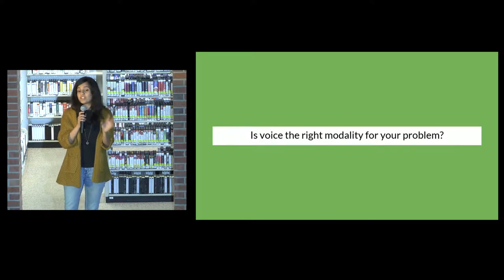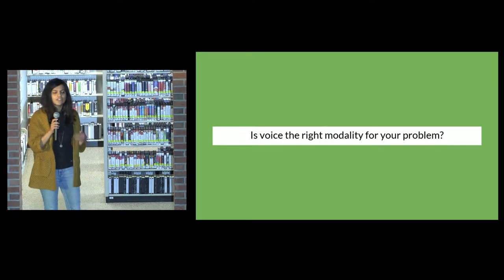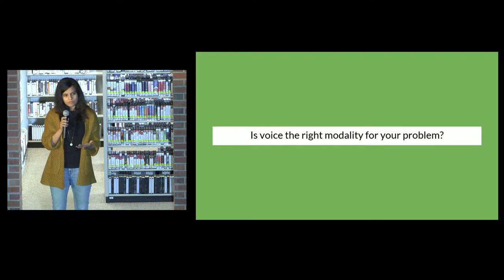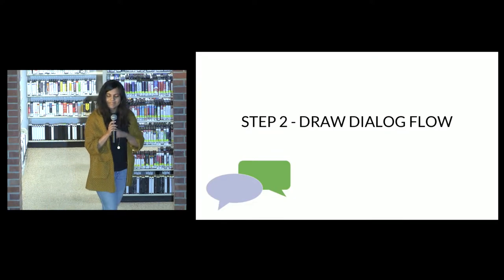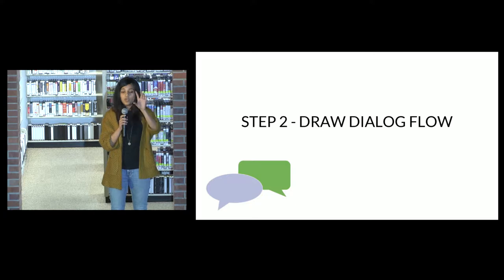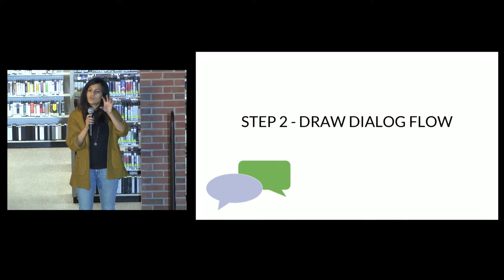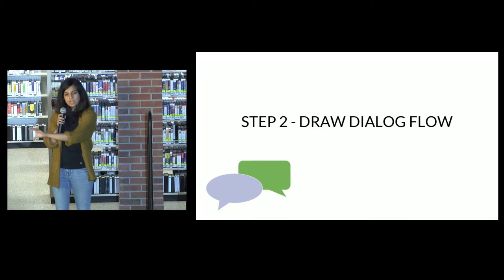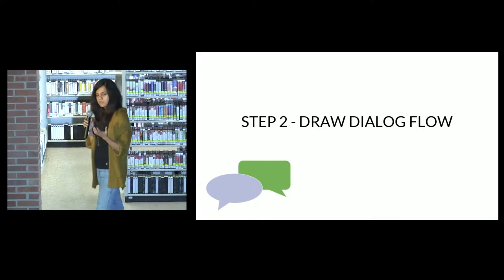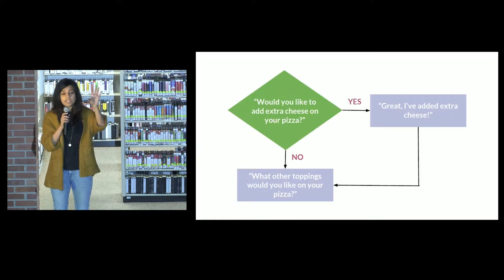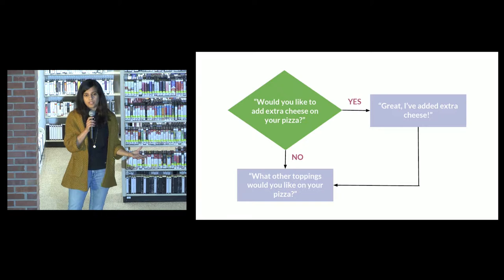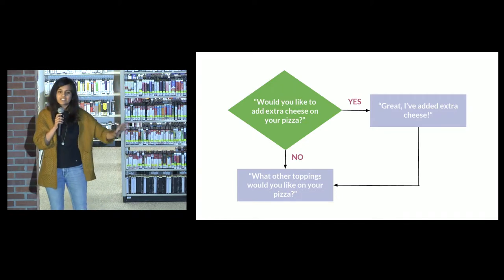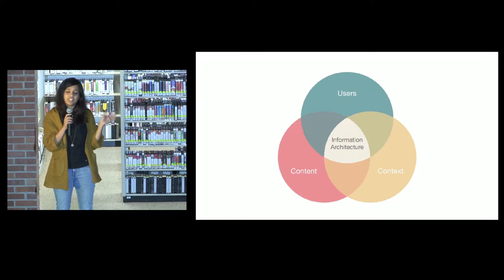Once you've identified your problem and convinced yourself why voice is the solution, move on to the next step: design a dialogue flow. A dialogue flow is essentially a decision tree with nodes and branches. The nodes are your decision points, and based on what your user says, you pick a particular branch. For example, if the Domino's app on Alexa says 'Would you like some extra cheese on your pizza?', and the user says yes, the app says 'Great, extra cheese is always good.' If they say no, it says 'Okay, what other toppings would you like?' You want to map out this entire decision tree to understand your information architecture.